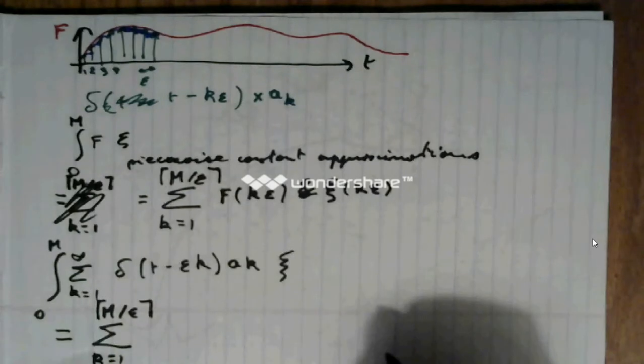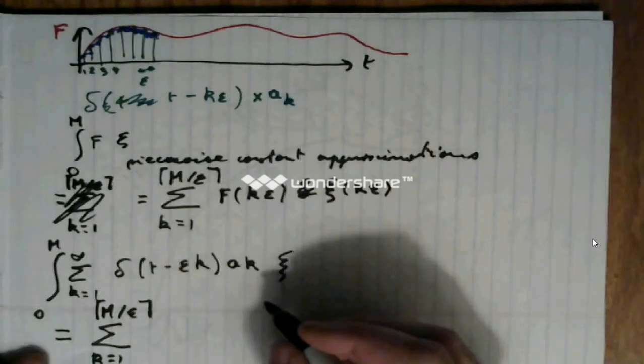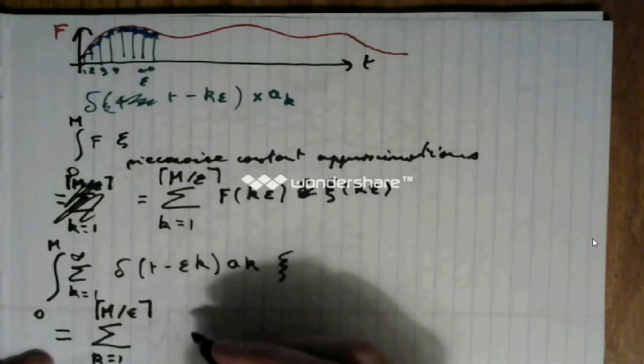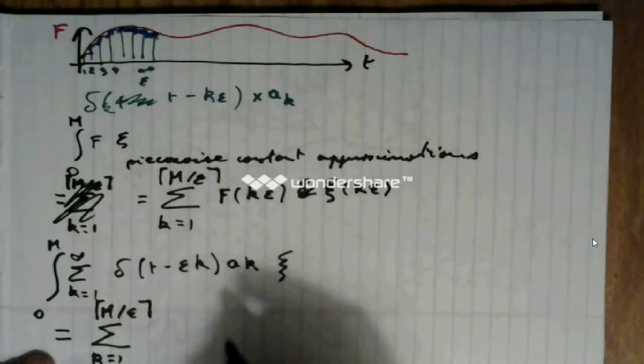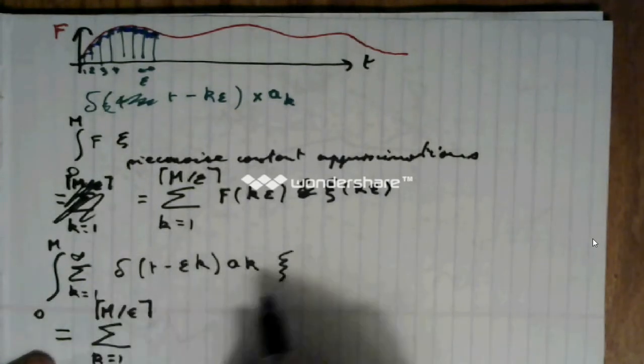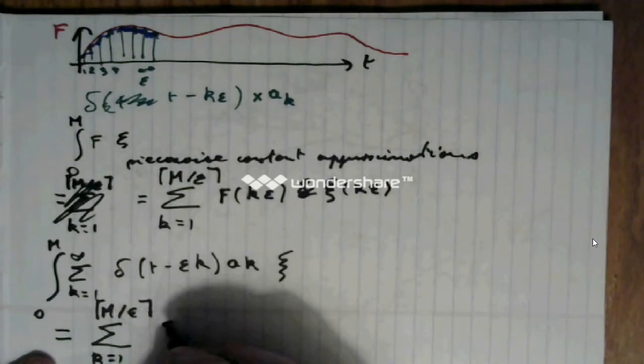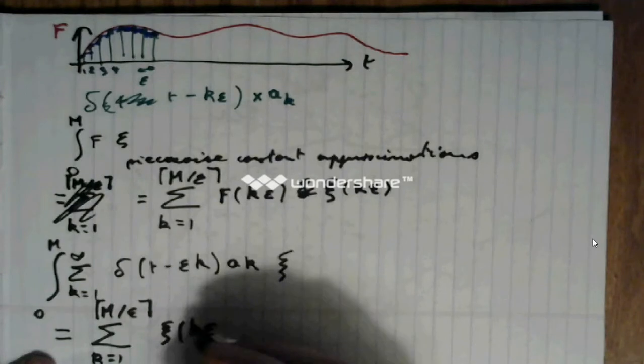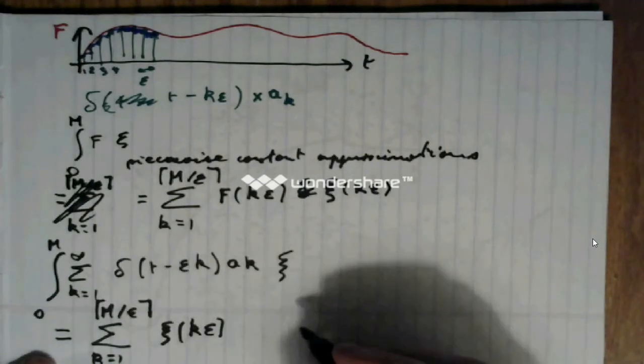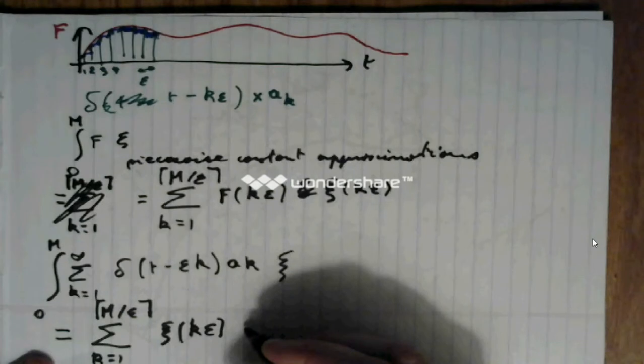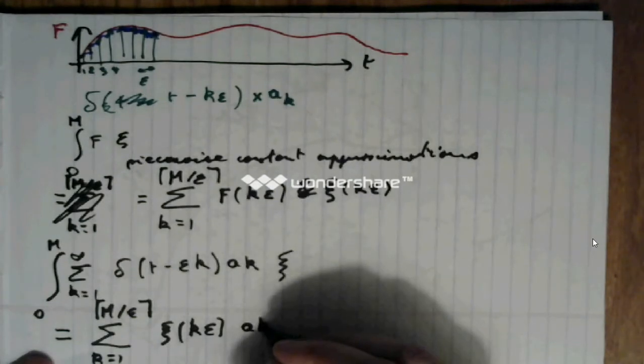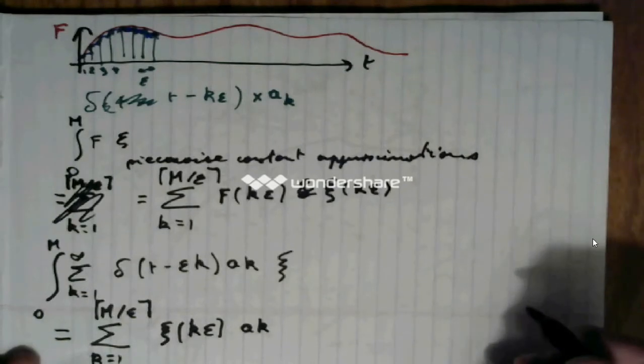I would find that this is equal to the sum from k equals 1 to m over epsilon, at least the approximate to it, or the nearest integer. Of xi expressed at k times epsilon times ak.